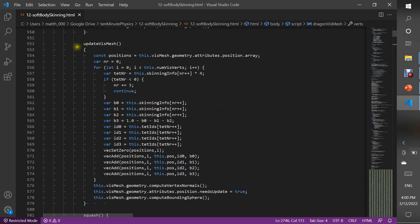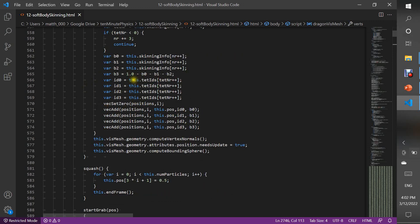After each time step, we call update visual mesh, which does the skinning. We iterate through all the visual vertices. First, we get the tetrahedral number the vertex is attached to. Then, we read the barycentric coordinates. Next, we get the indices of all the particles adjacent to the tetrahedron and compute the weighted sum using the positions of the particles adjacent to the tetrahedron.